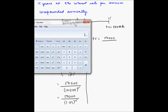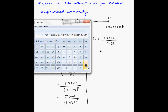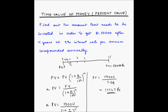Using a calculator, 1.09 to the power 15 equals 3.64. Since 3.64 is in the denominator, we compute 1/3.64 and multiply by 50,000. This gives a present value of approximately 13,727 rupees. So if we invest 13,727 rupees today at 9% interest compounded annually, the investment will grow to 50,000 rupees at the end of 15 years.